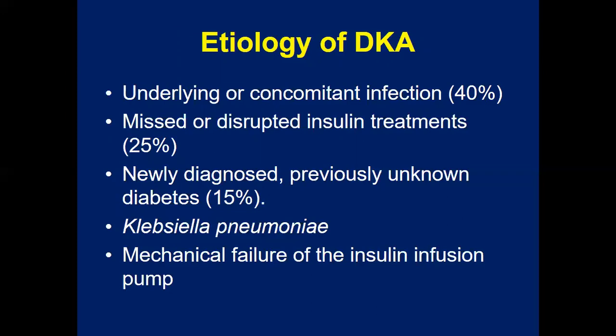Missed or disrupted insulin treatment is common in 25 percent of patients with diabetic ketoacidosis, meaning someone with type 1 diabetes has missed their doses or changed the dosage regimen on their own, causing a significant increase in glucose levels. Newly diagnosed cases presenting with DKA because they have not been taking any medication account for about 15 percent of cases.